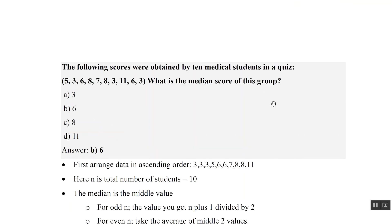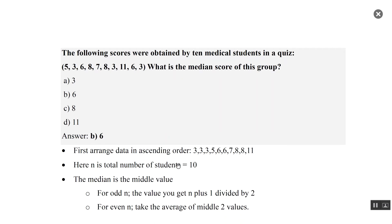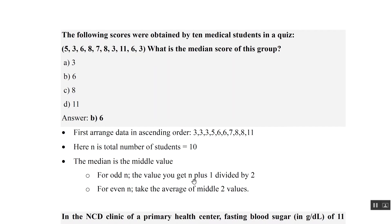Scores of students in a quiz are given. To find the median, first arrange in ascending order. The total number is 10, which is even, so we take the average of the two middle values using n divided by 2 and n/2 + 1. Six plus six divided by two gives us six, so the median is six.